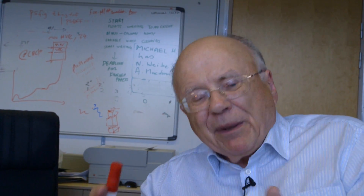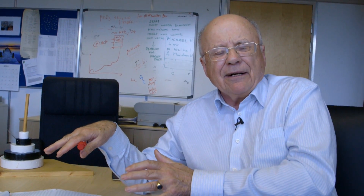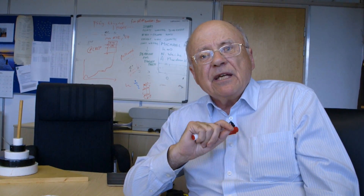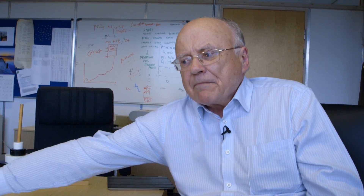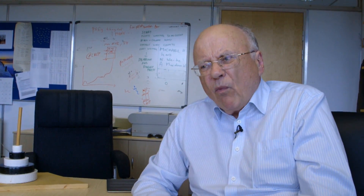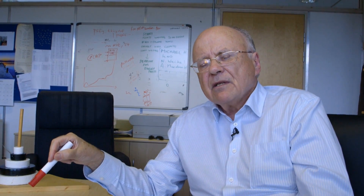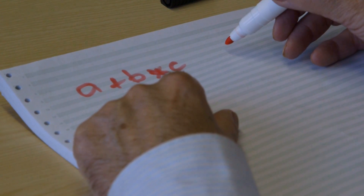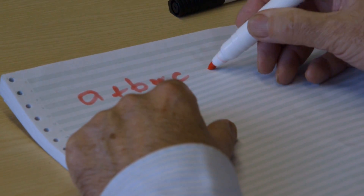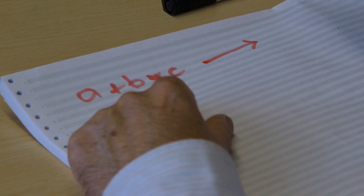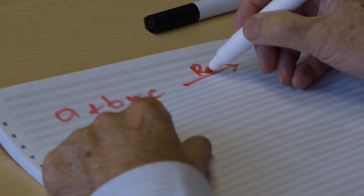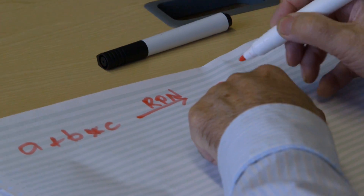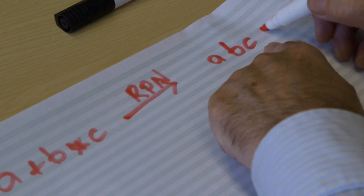Today I want to get properly into trees and show you how fundamental they are. An ideal way to do it is to pick up from the end of my stacks and reverse Polish video — which you might want to look at first if you haven't already — pick up from where we left off and say what's the fundamental story behind all of this. The answer is it's the tree shape. I started off by writing down the arithmetic expression a plus b multiplied by c. If you accept that the multiply must be done first, then the reverse Polish notation would of course be a b c star plus.